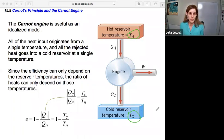Since the efficiency can only depend for a Carnot engine on the reservoir temperatures, the ratio of the heats can only depend on these temperatures. So for a Carnot engine, for this ideal maximum efficiency engine, we know that the ratio of Qc over Qh is equal to the ratio of Tc over Th. So this is a handy equation that comes into play, and we can use that in our efficiency equation.